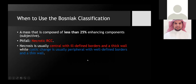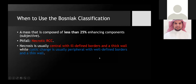When to use the Bosniak classification: the mass must be composed of less than 25% enhancing components — meaning at least 75% of the mass is cystic. This is subjective. A pitfall is necrotic RCC, where necrosis is typically central with ill-defined borders. This is how to differentiate between the two.